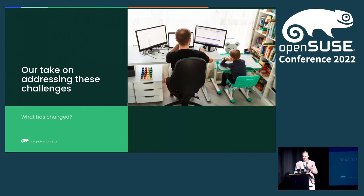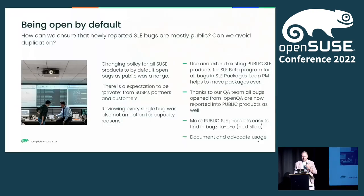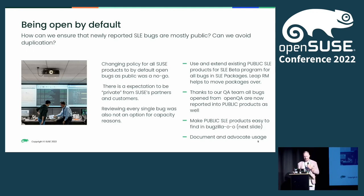So what was our take on addressing these challenges? Of course, we want to increase transparency and be open by default. But suddenly changing policy to open all bugs publicly was not a good thing, because a lot of partners would hit issues and complain. We also thought about reviewing every single open bug to check if it's public or private, but there's no capacity for that — the maintenance team would go crazy.